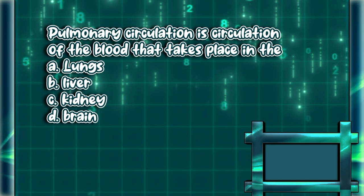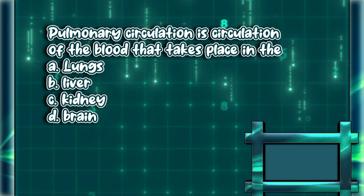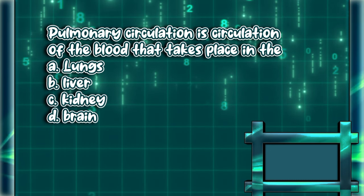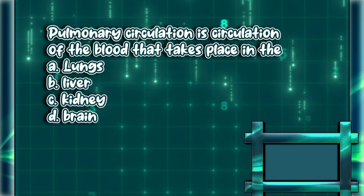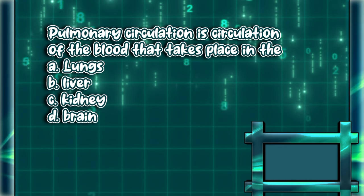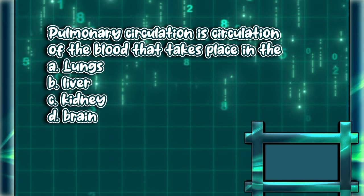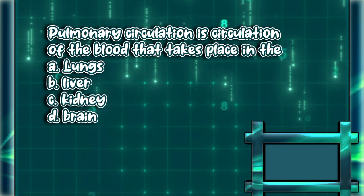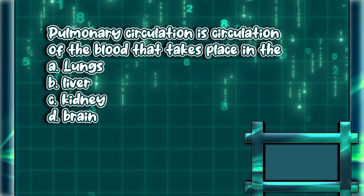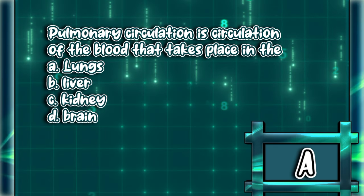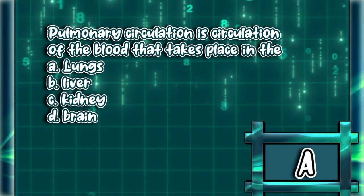Pulmonary circulation is the circulation of the blood that takes place in the: A. Lungs. B. Liver. C. Kidney. D. Brain. The answer is letter A.